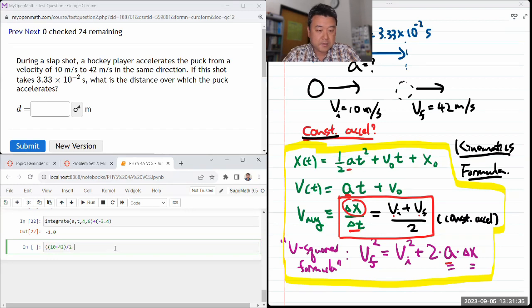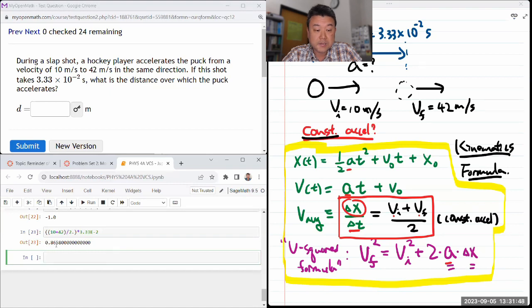I'm going to take this whole thing and multiply by the duration of time we've been given. This e notation is how you enter the scientific notation on sage math and a lot of calculators. That gives me 0.867 meters as the distance.